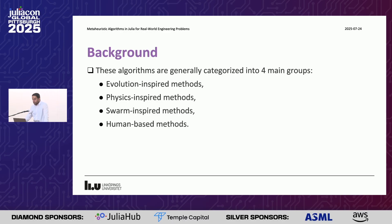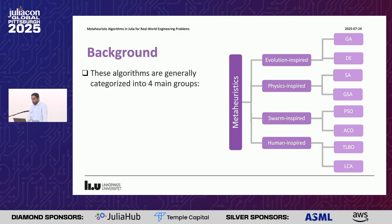We also have another categorization for metaheuristics. They can be defined as evolutionary or physics/chemistry-inspired methods, swarm-inspired methods, and human-based methods. The evolutionary class contains genetic algorithms and differential evolution. For physics, it contains algorithms like simulated annealing and gravitational search algorithm. For swarm optimization, it contains algorithms like particle swarm optimization and ant colony optimizer. For human-based, it contains algorithms like teaching-learning-based optimization.